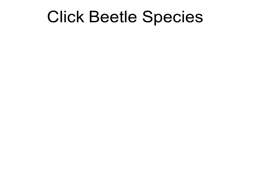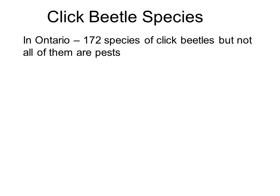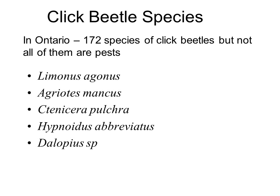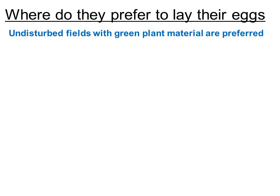Where do they prefer to lay their eggs? They like undisturbed fields with a lot of green plant material — something like a sod field. The soil remains moist under green material, and when the eggs hatch, the larvae have plenty of food. They really like sod fields and under-seeded fields. Growers who under-seed barley to red clover will have them in those fields. They also occur in pasture fields where there's enough food all year round. I've also seen them laying eggs in bare soil, but if the bare soil dries out, the eggs and young larvae dry out too.